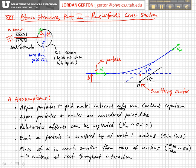We call that the impact parameter B — the distance between that trajectory and the scattering center. The alpha particle comes in, gets deflected, and goes out far away.